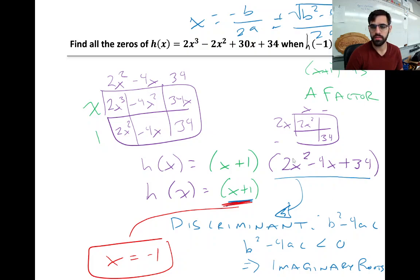The test to see if something like this is going to give imaginary roots or not is to just pull out that b squared minus 4ac. It's called the discriminant. If the discriminant is less than zero, like in this case, then it's going to be imaginary.